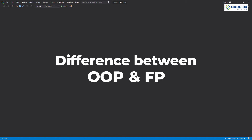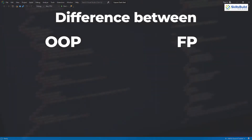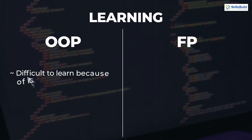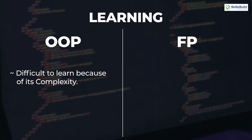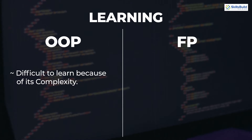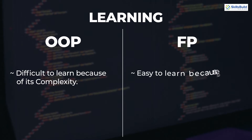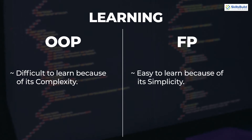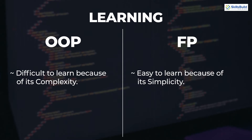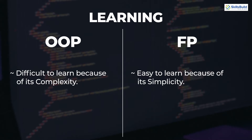I will use several features or concepts to differentiate both programming techniques. The first is learning. Object oriented programming can be a bit complex to learn, as we have a lot of things like objects, functions, function calls, parameters, parameter handling, protocols, inheritance, encapsulation, etc. However, all these things make it really powerful. Functional programming is simpler to learn because we don't have to care about complex data handling.